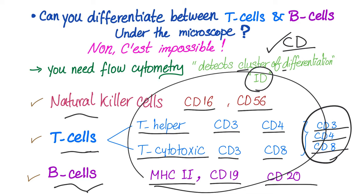Let's say we find a cell that is CD20 positive — you have a B-cell leukemia or lymphoma. What if it's CD3 positive and CD4 positive? You have a T-helper cell leukemia or lymphoma. If I tell you I found a CD3 positive, CD8 positive cell in the bone marrow — you have T-cell leukemia. What if it was in the lymph node? You have T-cell lymphoma. It's cool to diagnose the disease, but it's not cool if you have T-cell lymphoma. I'm sorry.